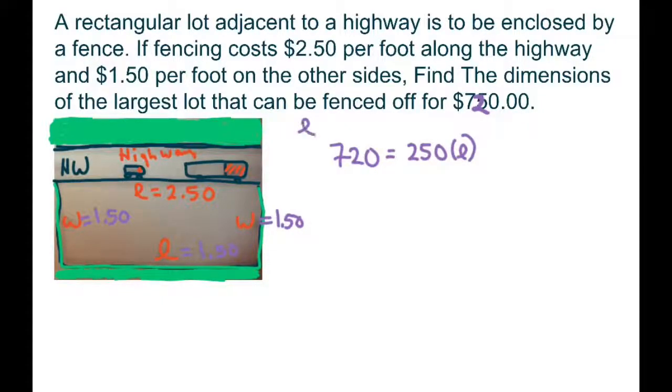So we're going to have length equals L and W equals width. And then we're going to have that's $2.50 and plus $1.50 for the other length, plus we have two widths, these two right here. So two widths.